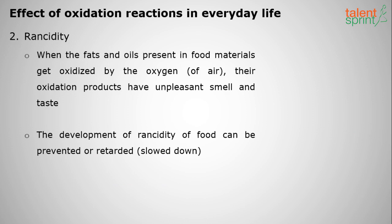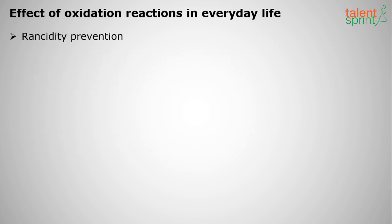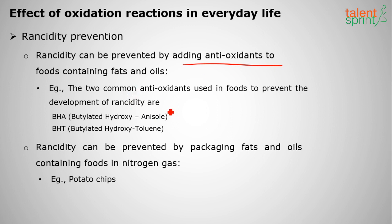The second effect is rancidity. Fats and oils present in food materials get oxidized by oxygen in the presence of air and give an unpleasant smell and taste. This can be prevented by adding antioxidants — namely butylated hydroxyanisole (BHA) or butylated hydroxytoluene (BHT). Foods can also be packaged with nitrogen gas, as seen in potato chips packets, which prevents oxidation and spoilage.